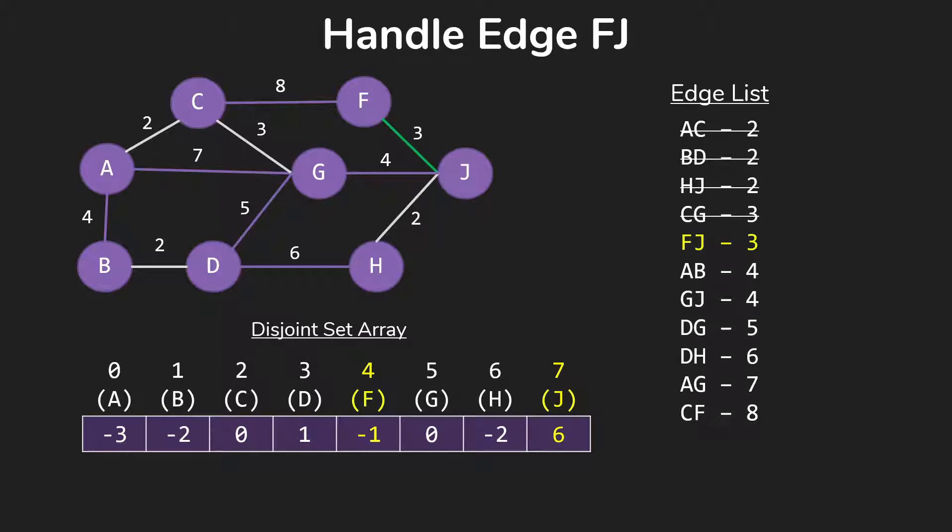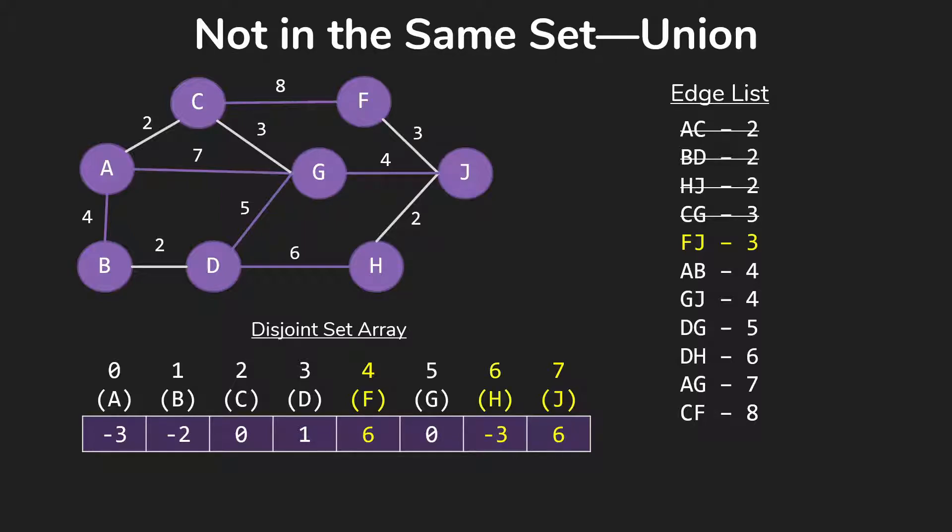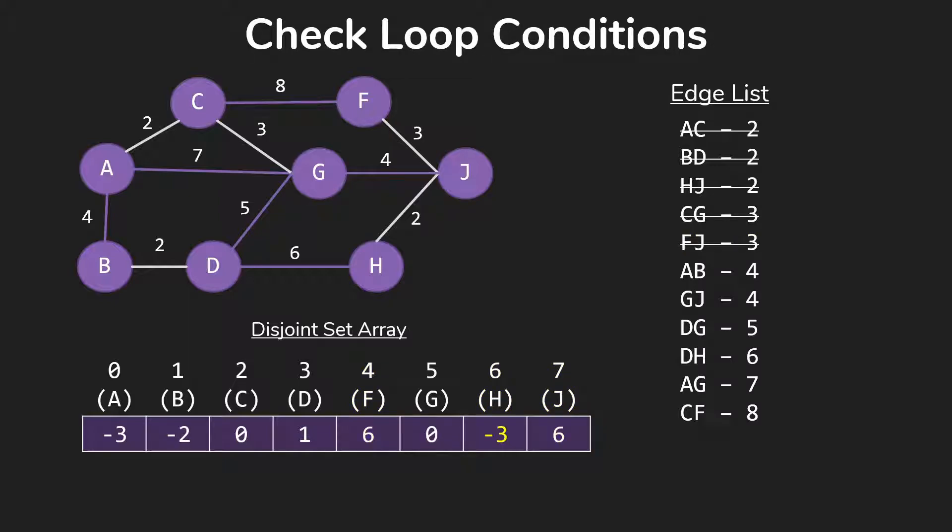so we move on to edge FJ. Those again are in two different sets. So we're going to do that union, adding that edge to our minimum spanning tree. Still haven't finished,